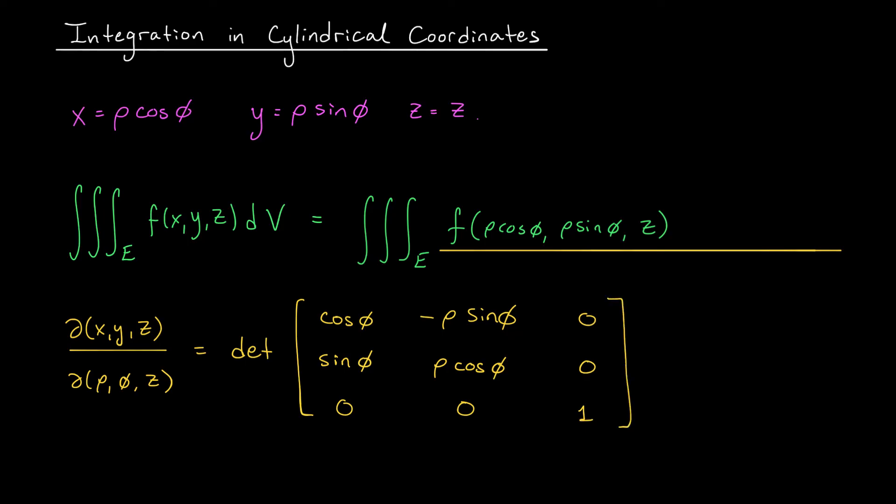To evaluate this determinant, I'm going to expand about the last column. I have one times the determinant of the two by two matrix in the top left. So that's the determinant of cos phi, sin phi, -rho sin phi, rho cos phi.